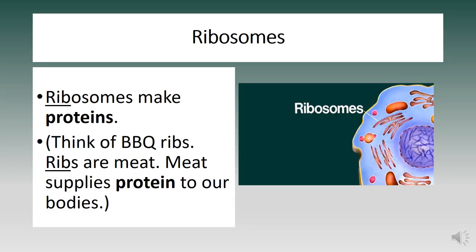We now come to ribosomes. These are found in living cells and serve as the site for biological protein synthesis — which is just a fancy way of saying a cell makes protein. To remember this for the TEAS exam, the first three letters in ribosomes is R-I-B. Think barbecue ribs — meat provides our bodies with needed proteins, and ribosomes make proteins for the cell.